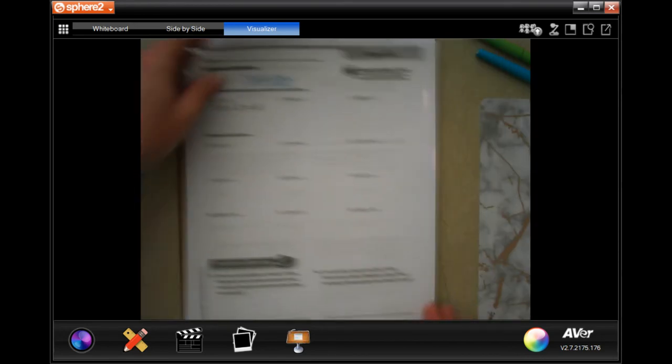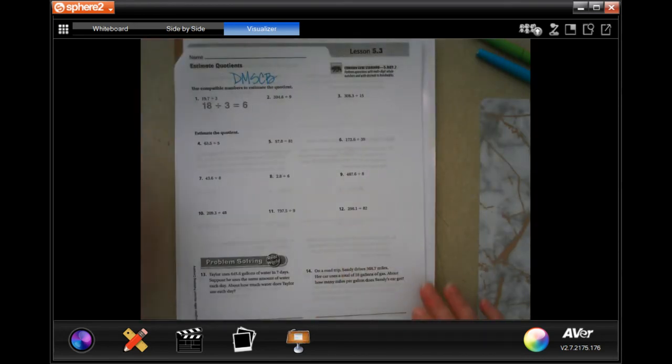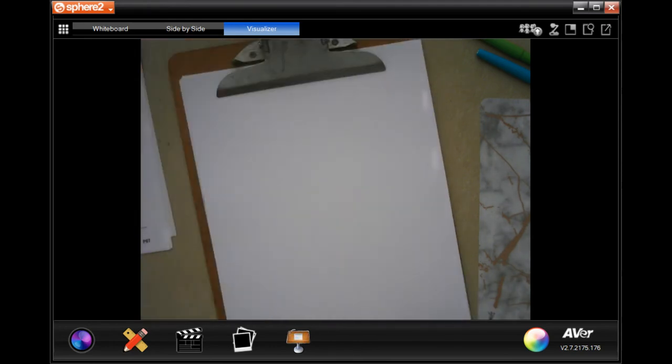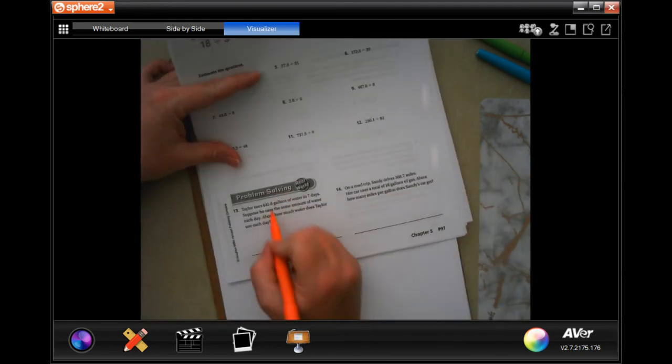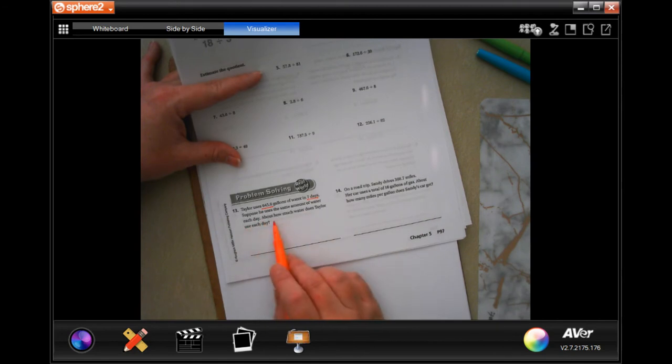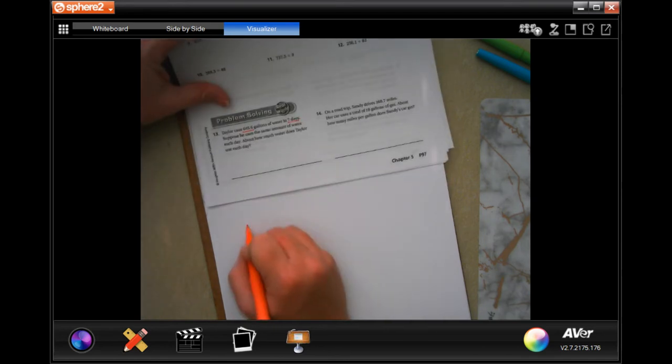So you guys are going to finish through 12. We are going to go down to number 13. It says Taylor uses 645.6 gallons of water in seven days. Suppose he uses the same amount of water each day. About how much water does Taylor use each day?